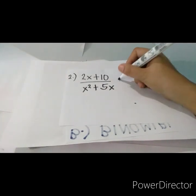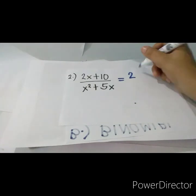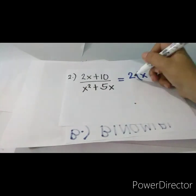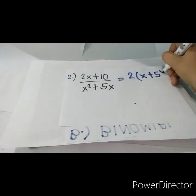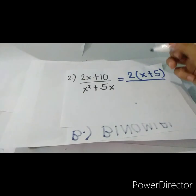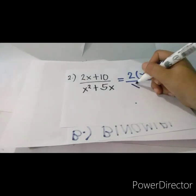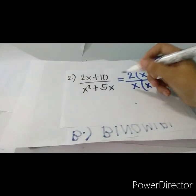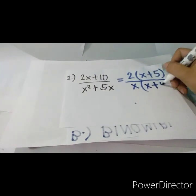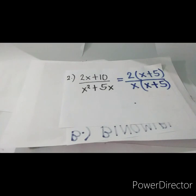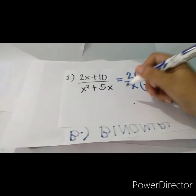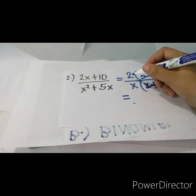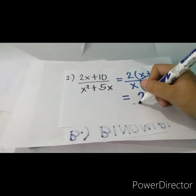The next binomial example is (2x + 10) over (x squared + 5x). Apply common monomial factoring: the GCF of 2 and 10 is 2, giving 2(x + 5). For the denominator, the GCF is x, giving x(x + 5). Cancel out the common factor (x + 5), and the remaining final answer is 2 over x.